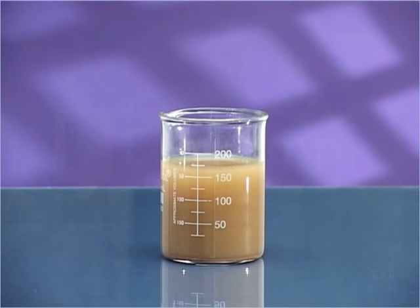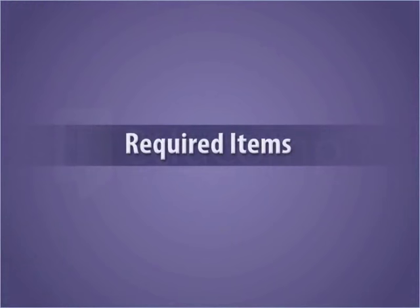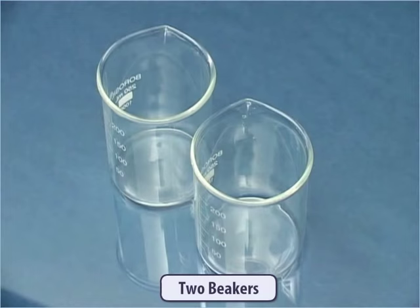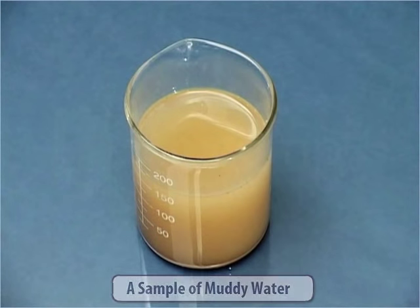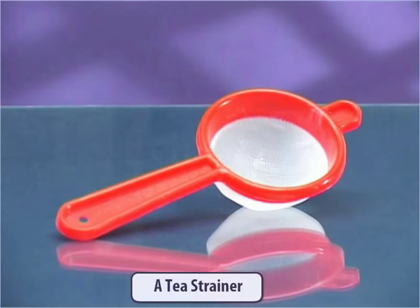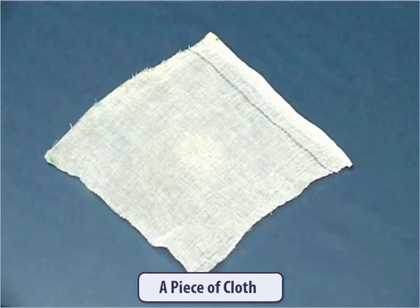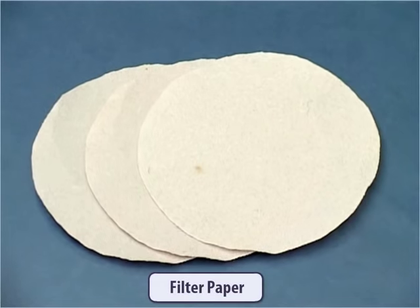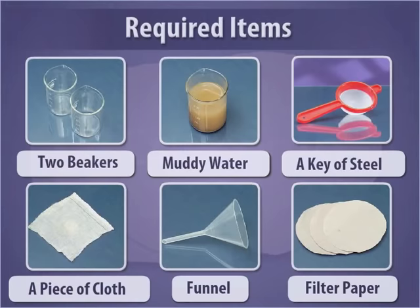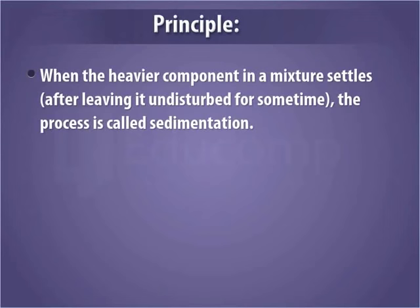For this activity we need two beakers, a sample of muddy water, a tea strainer, a piece of cloth, a funnel, and filter paper. When the heavier component in a mixture settles, the process is called sedimentation.